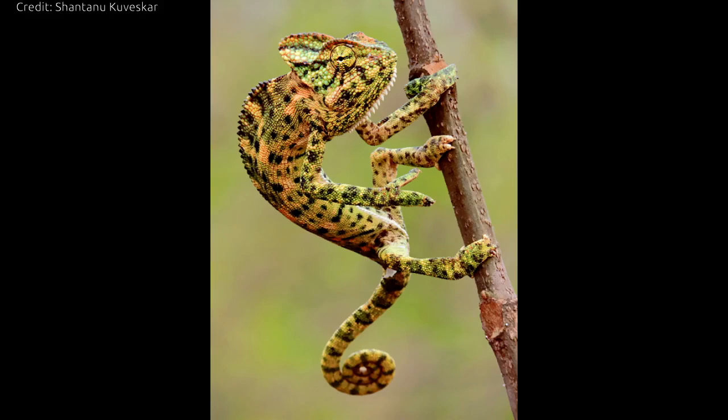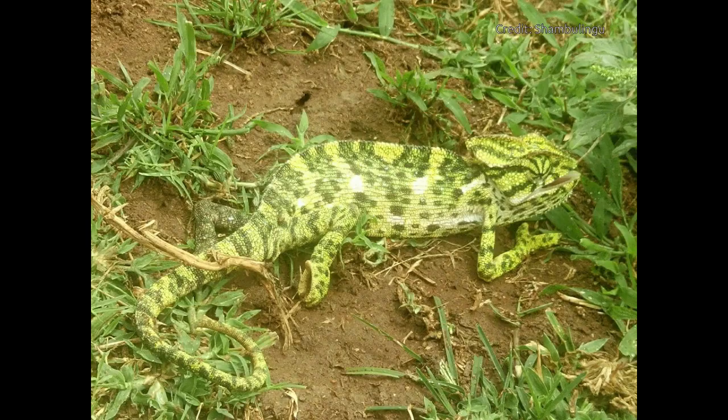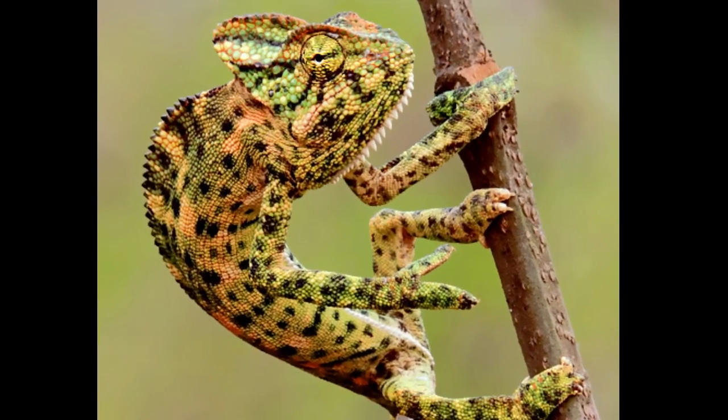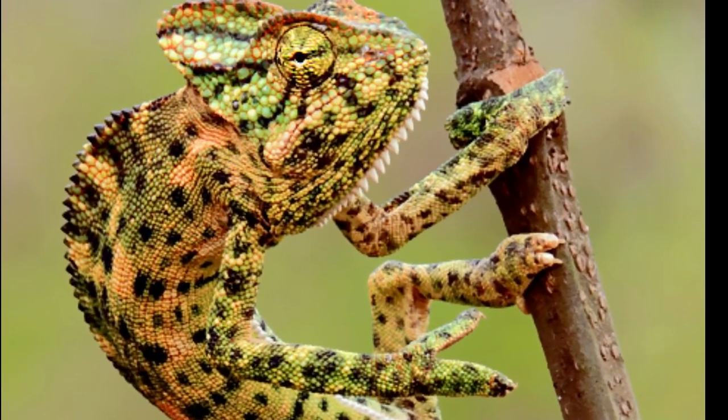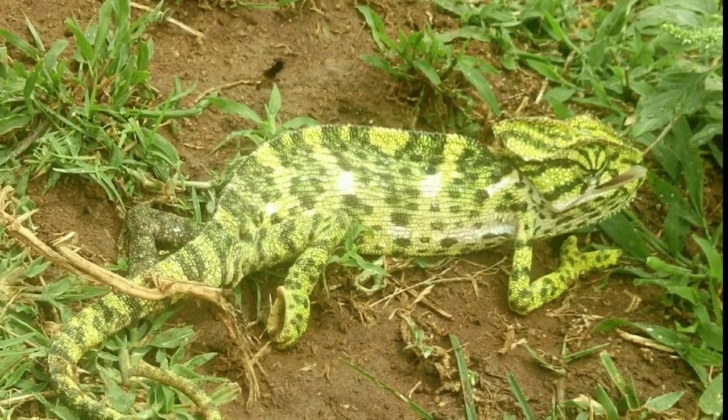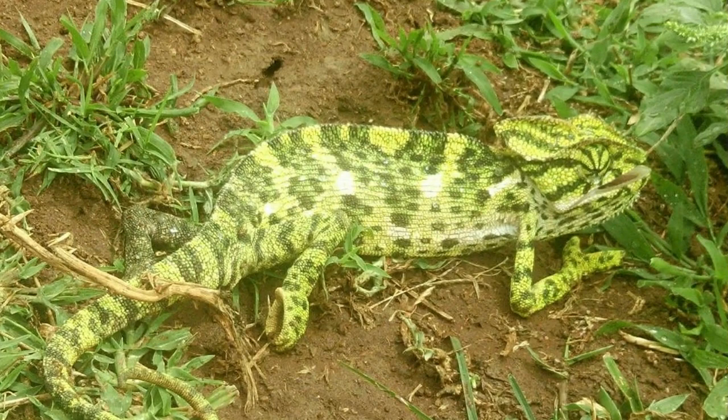Chameleons are famous for their color-changing abilities. Depending on their body temperature or mood, their nervous system directs skin tissue that contains nanocrystals to expand or contract, changing how the nanocrystals reflect light and turning the reptile skin a rainbow of colors.